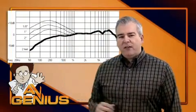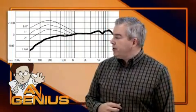So cardioid mics exaggerate bass frequencies when they're placed near a sound source, and the bass boost gets larger as you move the mic closer. Look at the response graph of a typical cardioid mic, the Shure SM58.